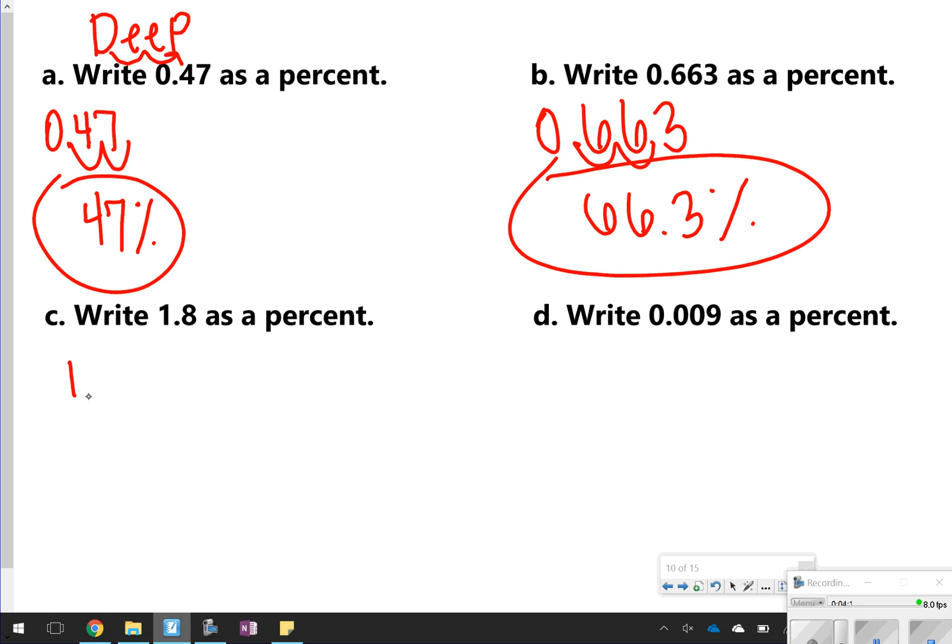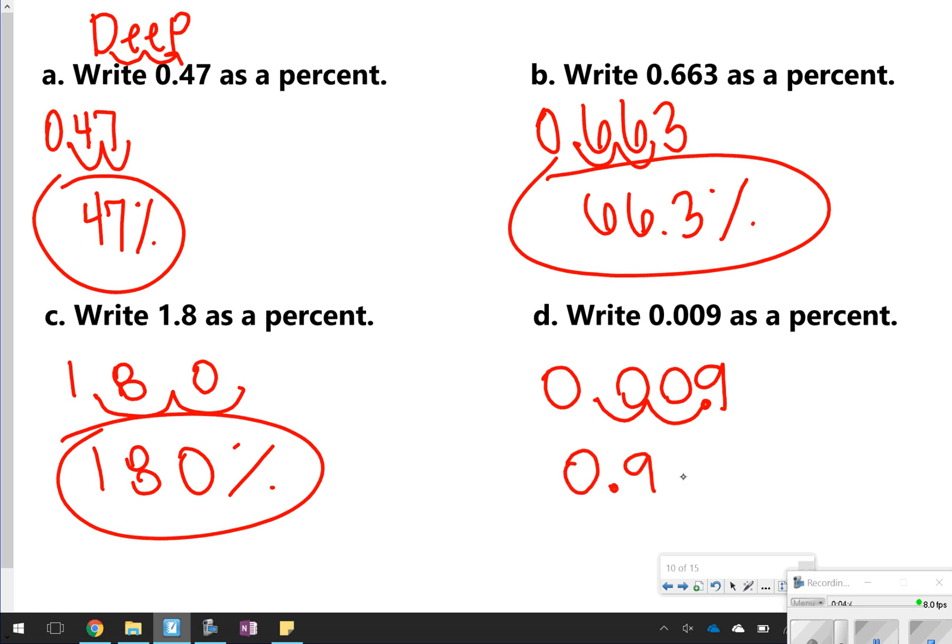Over here, I have the number 1.8, so I'll write 1.8 and move it once, twice. I'm going to fill up any empty spots with a zero, so my new number changes to 180%. And then over here for letter D, I would write down 0.009, moving one, two spaces to the right. It still stops there, so I'm going to have 0.9%.